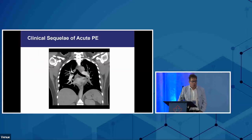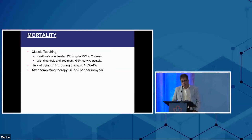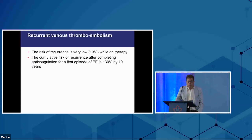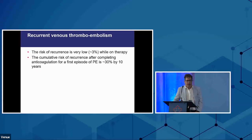So what happens after a pulmonary embolism? We know mortality is rare while on therapy, though many PE patients have other severe illnesses — cancer, cardiovascular disease, heart failure — and mortality from underlying disease is much higher. Recurrent PE on anticoagulants is very low, about 3%, usually in people with malignancies. But when we stop anticoagulants, especially in idiopathic disease, recurrence rates can reach 30% by five years.